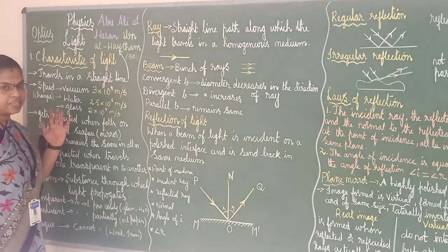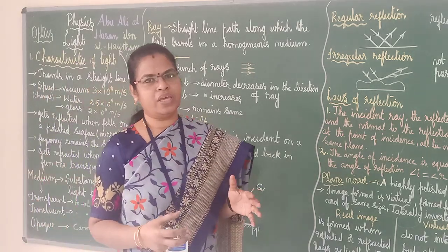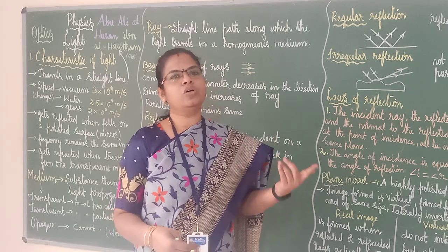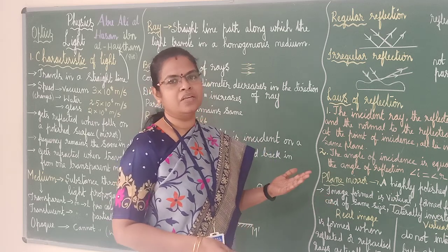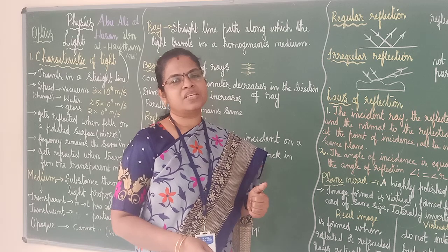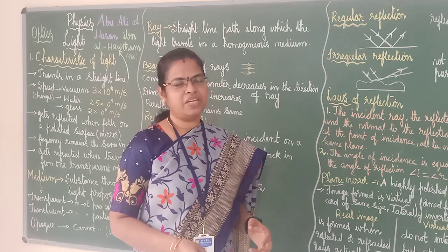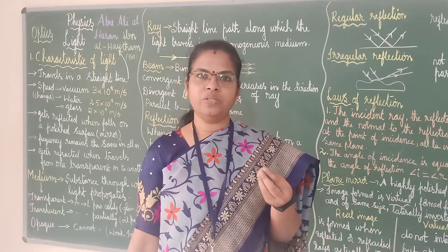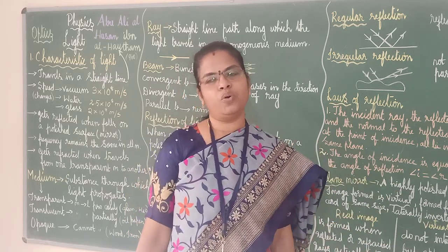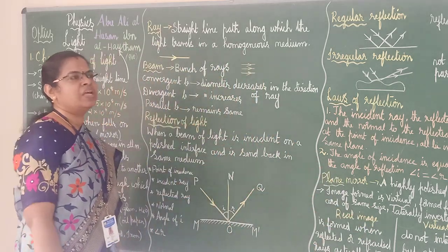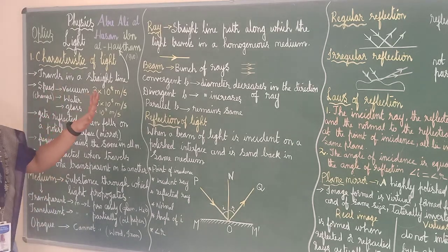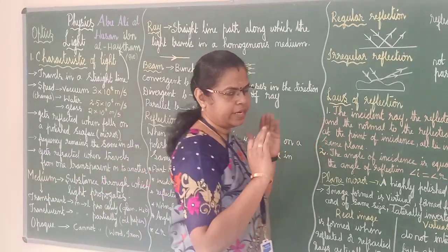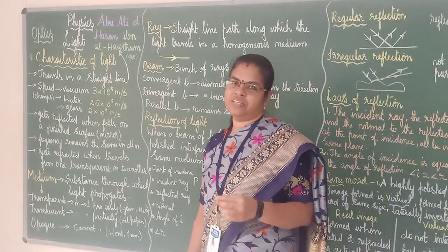Now, before starting the light chapter in detail, we will brush up what we have studied. Our basic knowledge we should check. We know that light always travels in a straight line. Light always travels in a straight line. This property is called rectilinear propagation of light.